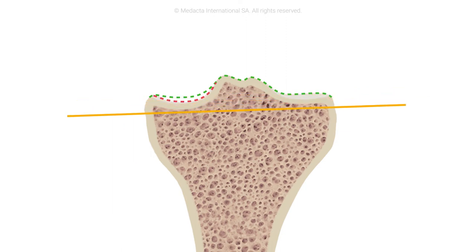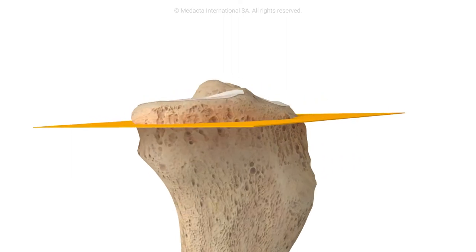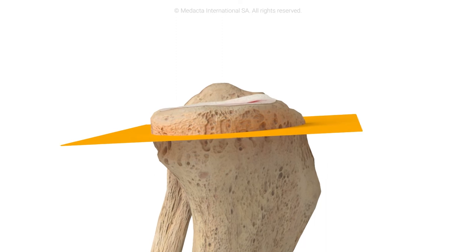A symmetric cut is performed on the medial and lateral sides, restoring the native slope and cutting exactly the implant thickness.